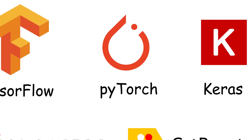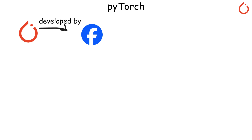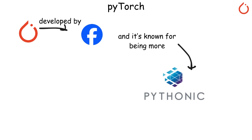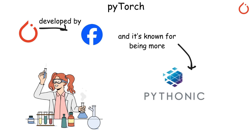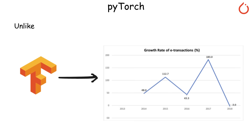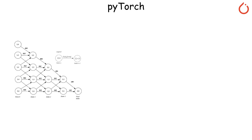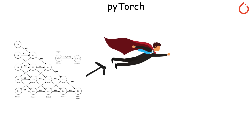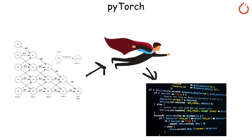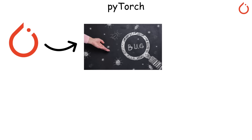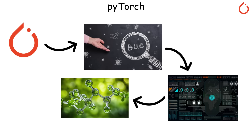PyTorch was developed by Facebook's AI Research Lab, and it's known for being more Pythonic and easier to experiment with. Unlike TensorFlow's static graphs — at least before TF 2.0 — PyTorch uses dynamic computation graphs, meaning the graph is created on the fly as your code runs. This makes debugging, visualization, and model iteration much simpler.